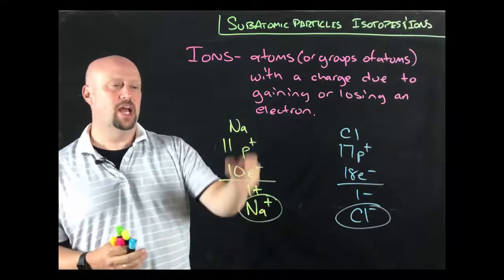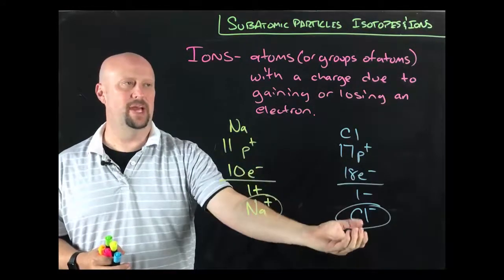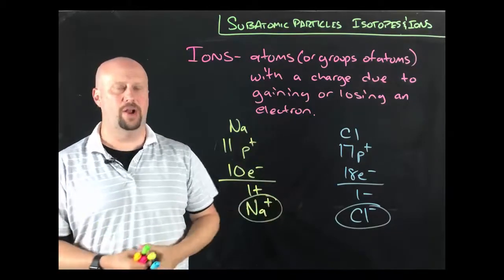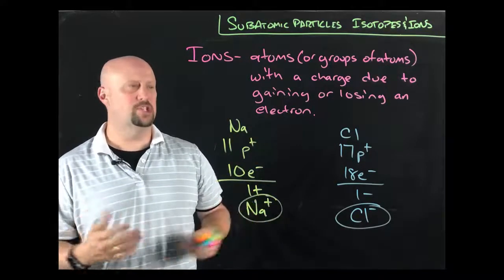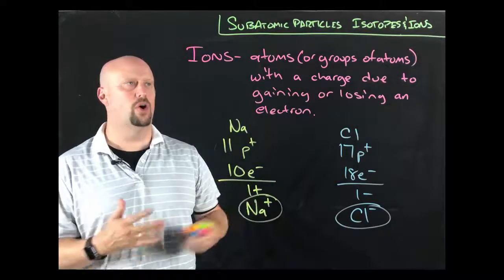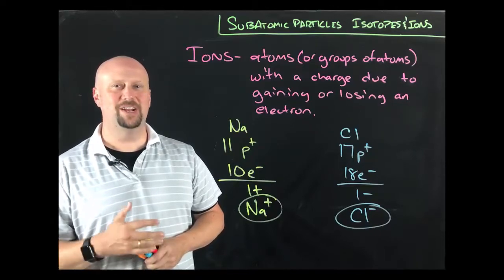But remember that what you're losing or gaining is a negative. So it has the opposite effect of what the normal English definition of that word would tell us. And so that means that losing an electron makes something positive. Gaining an electron makes it negative. And we're going to talk a lot more about ions when we get into valence and electron configurations and all of that. But I thought you ought to know that along with isotopes while we were talking about subatomic particles. All right? Thanks, kiddos.